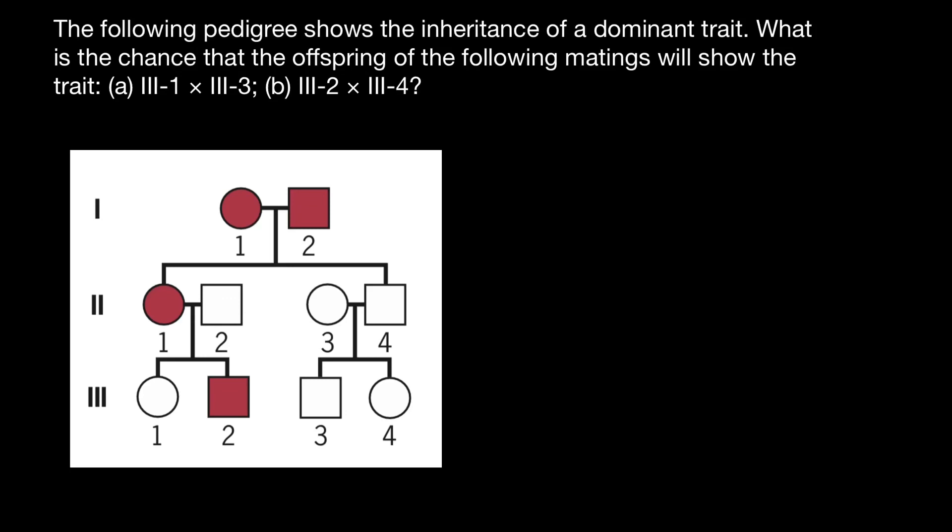What is the chance that the offspring of the following matings will show the trait? The matings are: three-one with three-three, and two with three-four.